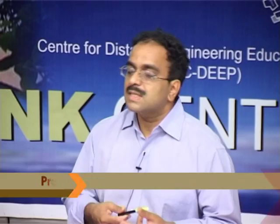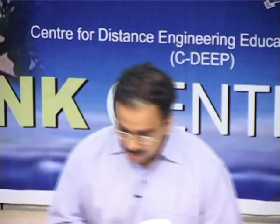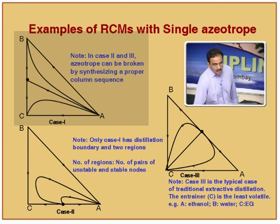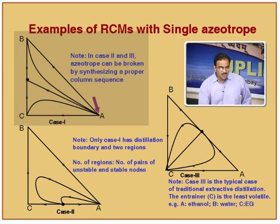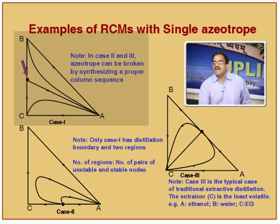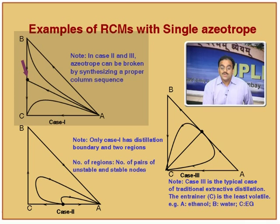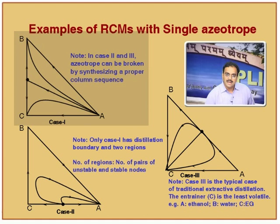Just looking at a residue curve map, you can synthesize the column sequence. That may not be possible for this particular azeotrope or other RCM. You try it out — can I use A here as an entrainer to break this azeotrope? You try it out yourself and you will realize that it is not possible if the boundary is linear. So, what I am trying to tell you is RCM decides.